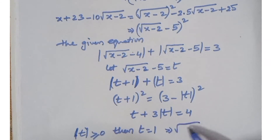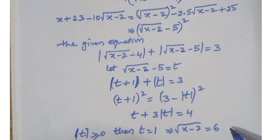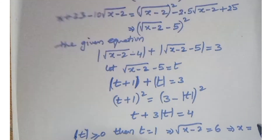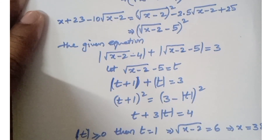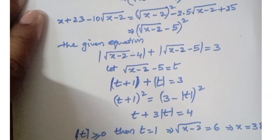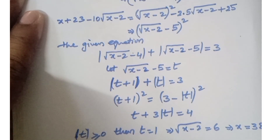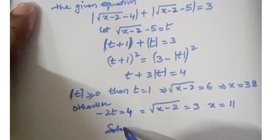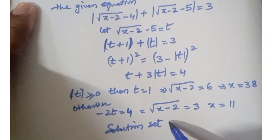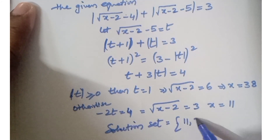From t equals 1: root of x minus 2 equals 6, which implies x equals 38. Otherwise, from minus 2t equals 4: root of x minus 2 equals 3, which gives x equals 11. Therefore the solution set is {11, 38}.